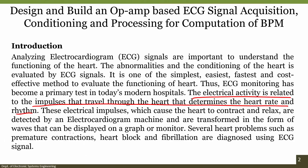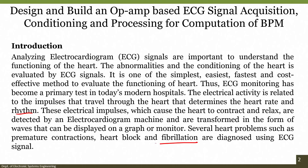Several heart problems such as premature contractions, heart block and fibrillations are diagnosed using the ECG signal. We will understand what exactly fibrillation means and the difference between different types of fibrillation. We will in particular focus on atrial fibrillation and sensors that can help make the catheter smarter for performing ablation. We will talk about this particular heart disease at the end of this module, but first let us understand how to design this signal conditioning circuit.